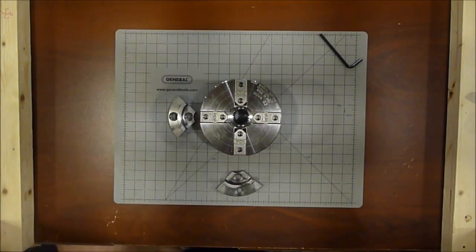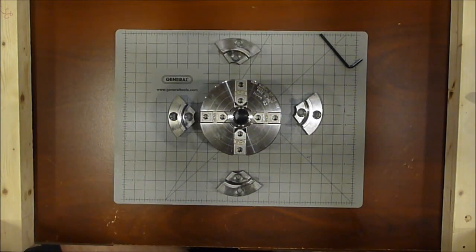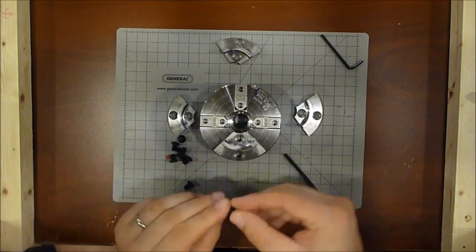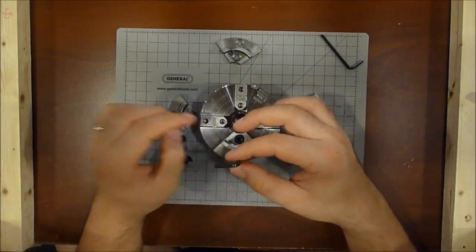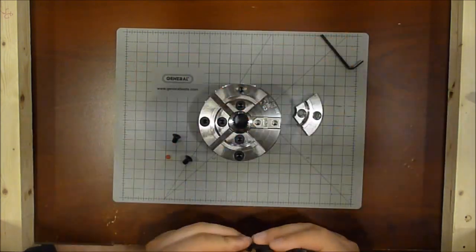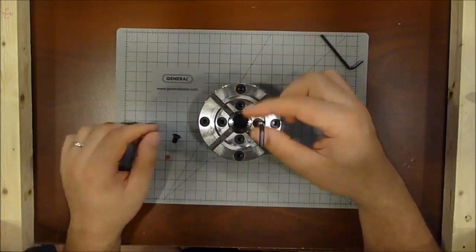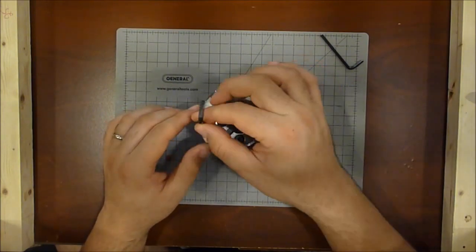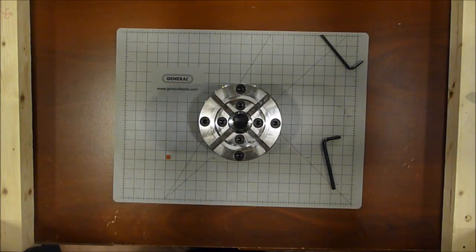The four jaws must be oriented in accordance to their four numbered locations. Once in place, they must be secured by inserting the countersunk screws, two for each jaw. The screws are finger tightened and then backed off half a turn in order to loosen them.